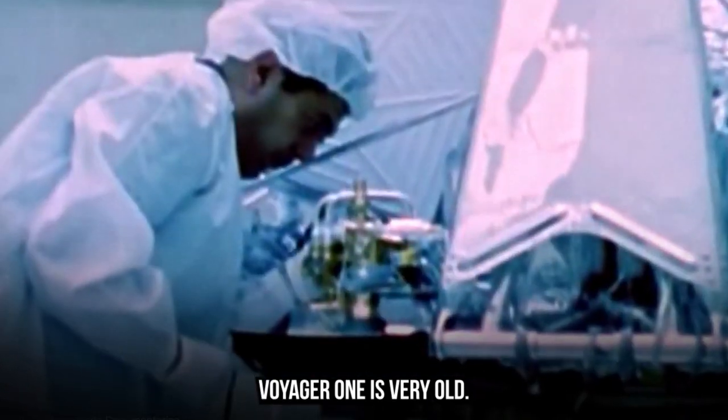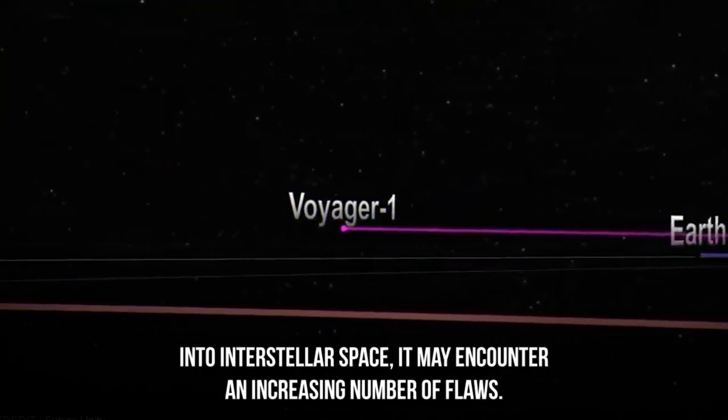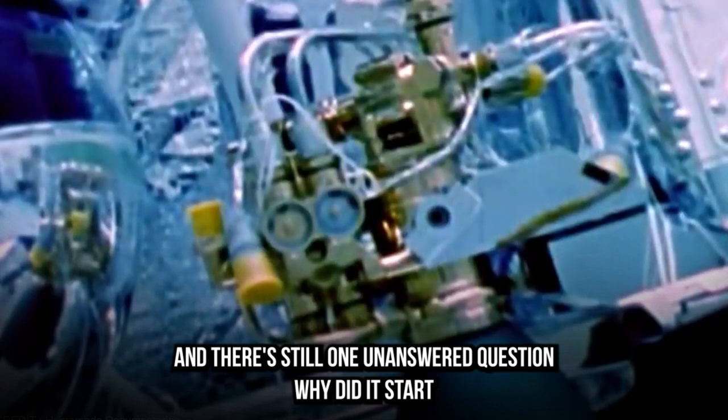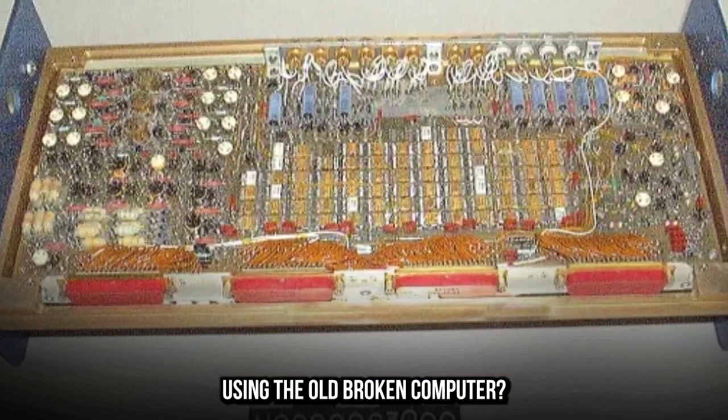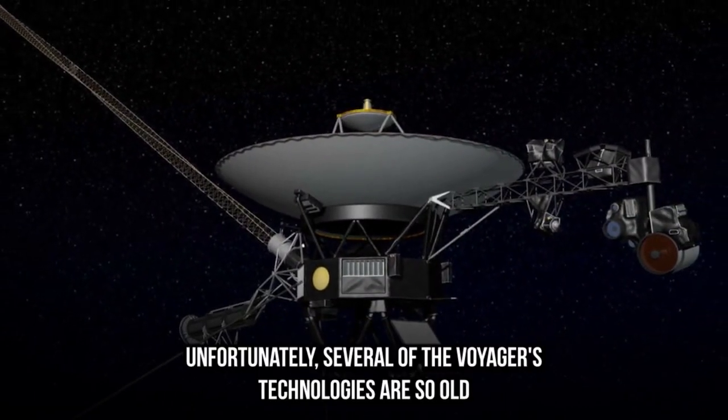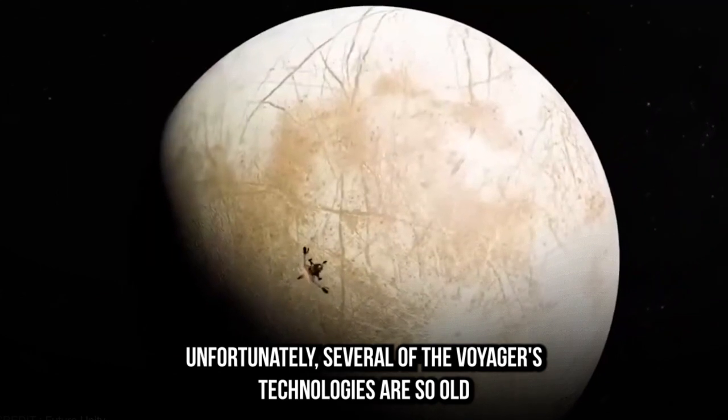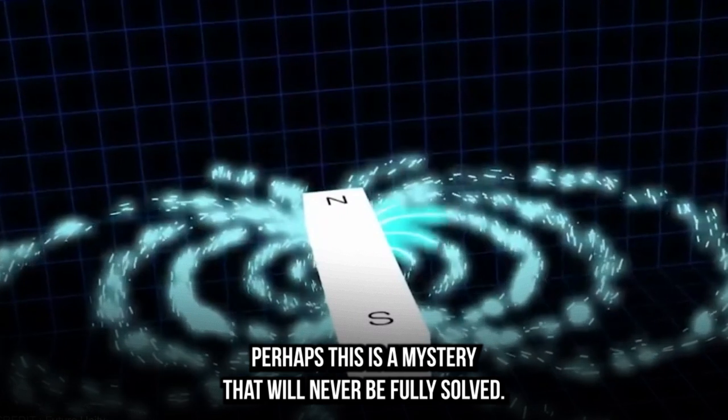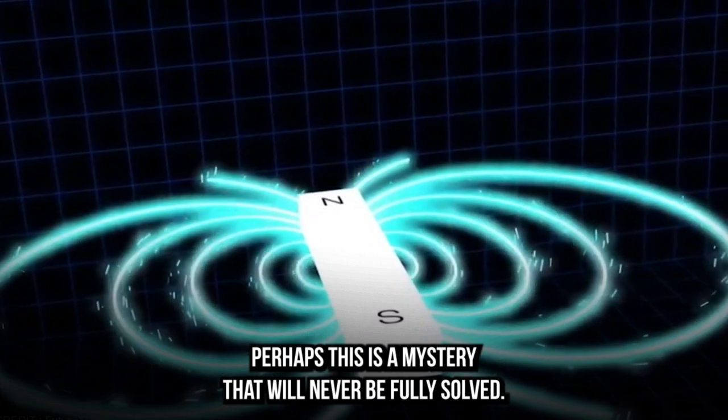Voyager 1 is very old. As it advances into interstellar space, it may encounter an increasing number of flaws. And there's still one unanswered question: Why did it start using the old, broken computer? NASA is still unsure of the answer. Unfortunately, several of the Voyager's technologies are so old that their creators have long ago passed away. Perhaps this is a mystery that will never be fully solved.